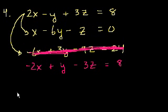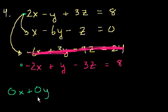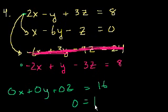If I add this equation to this equation, 2x minus 2x is 0x. Minus y plus y, that's 0y. Plus 3z minus 3z, they all cancel out. These are equal to 8 plus 8 is equal to 16. So you get 0 is equal to 16, which makes no sense. So there's actually no solution here.